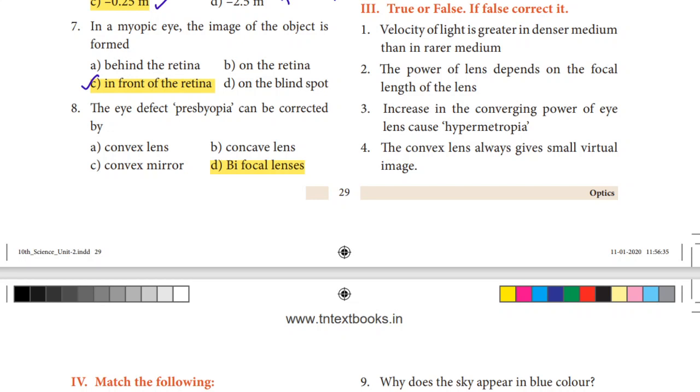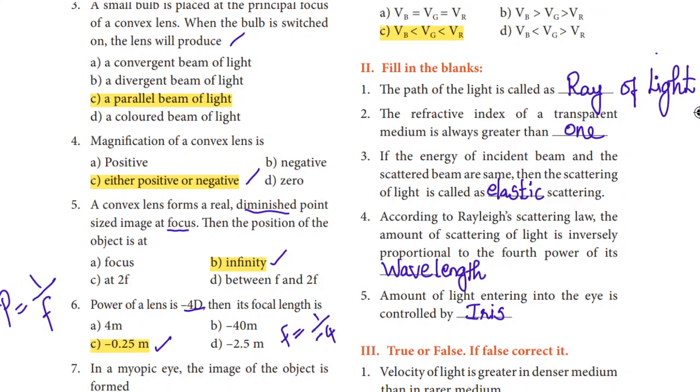Next question: The eye defect presbyopia can be corrected by what? In presbyopia, there is both short-sightedness and long-sightedness problem. To correct this, we use bifocal lens, which consists of both convex and concave lenses. So option D, bifocal lens, is the right answer.